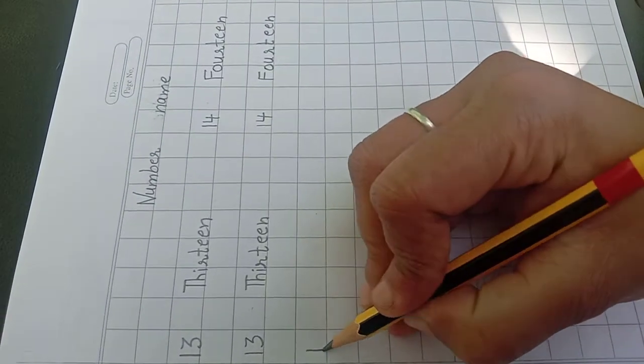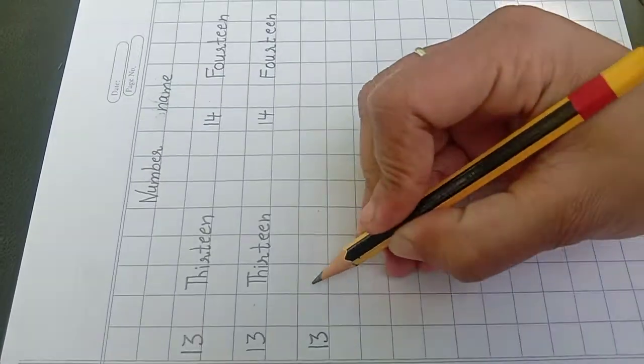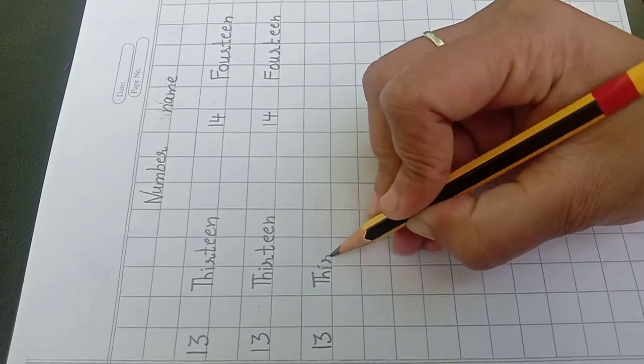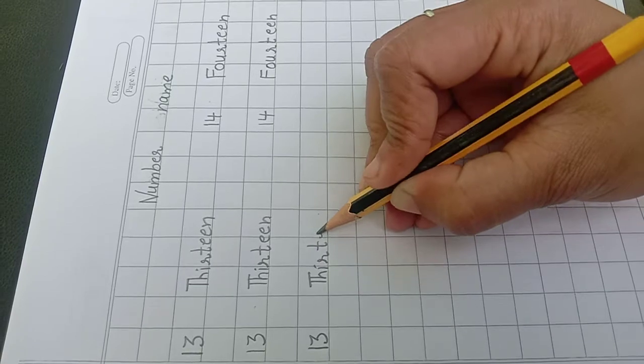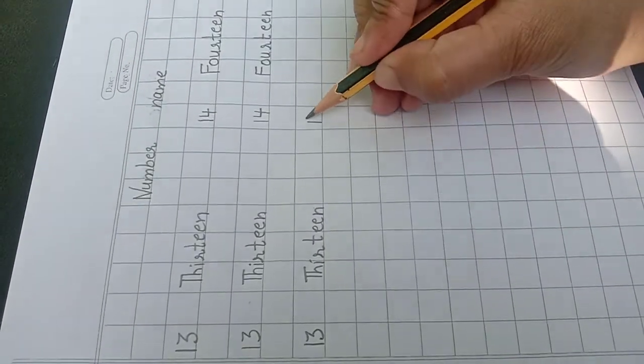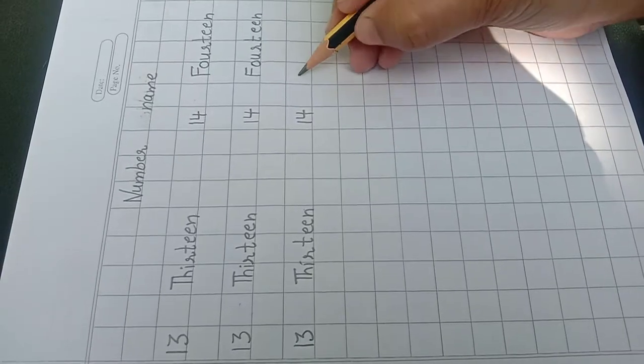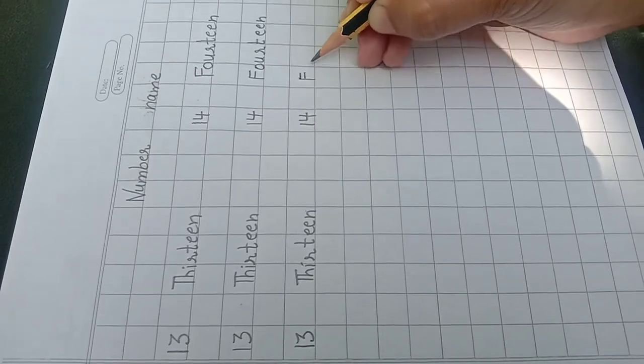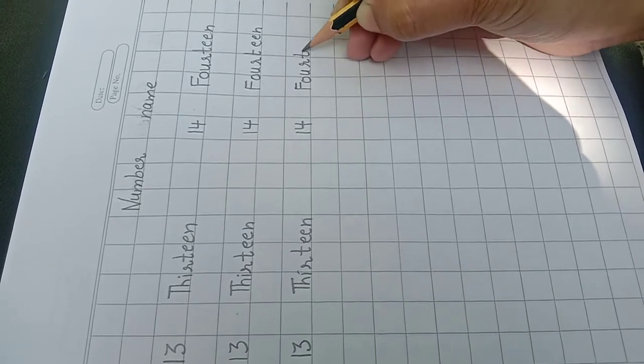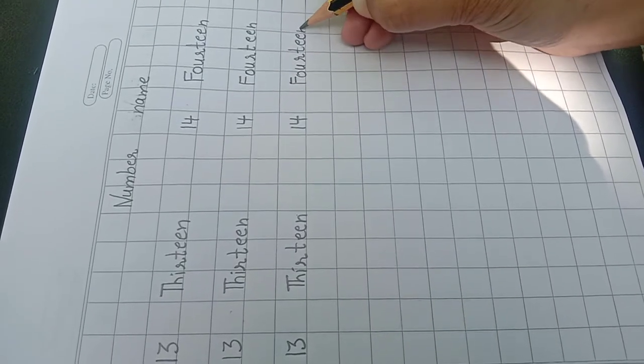Learn spelling of 13: T-H-I-R-T-E-E-N. 13, 14. F-O-U-R-T-E-E-N. 14.